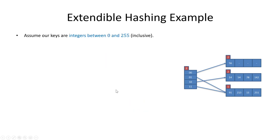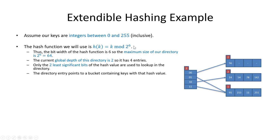The data in our example will be integers between 0 and 255. Our hash function will be mod 2^6, which effectively takes our 8-bit data and truncates the top two bits, leaving the lowest six bits. This means the maximum directory size in our example is 2^6 = 64. With our current global depth of two, we only need to look at the two least significant bits.